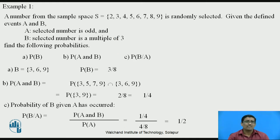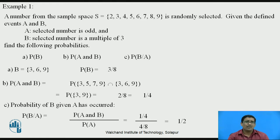Now consider the first example. A number from the sample space S = {2, 3, 4, 5, 6, 7, 8, 9} is randomly selected. Given the defined events A and B: event A is the selected number is odd, and B is the selected number is a multiple of 3. Find the following probabilities: (a) probability of B, (b) probability of A and B, (c) probability of B given A. For probability of B, we apply the basic definition P = N/S, where N is the number of favorable outcomes and S is the sample space. B is selected number is a multiple of 3, and the sample space has 8 elements.